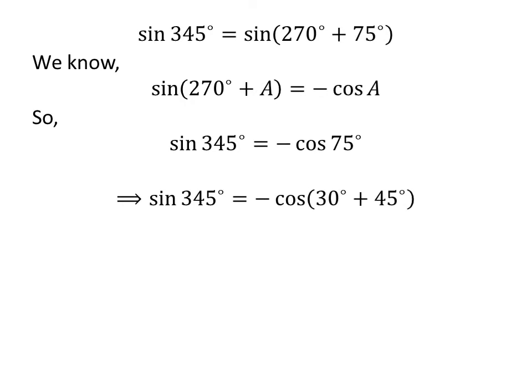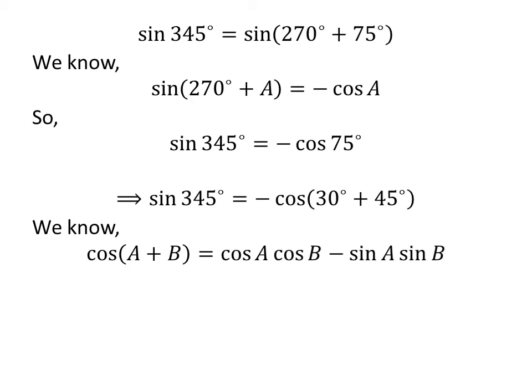Again, 75 degrees is equal to 30 degrees plus 45 degrees. So, sine of 345 degrees is equal to minus cosine of 30 degrees plus 45 degrees. We know cosine of A plus B is equal to cosine of A times cosine of B minus sine of A times sine of B.